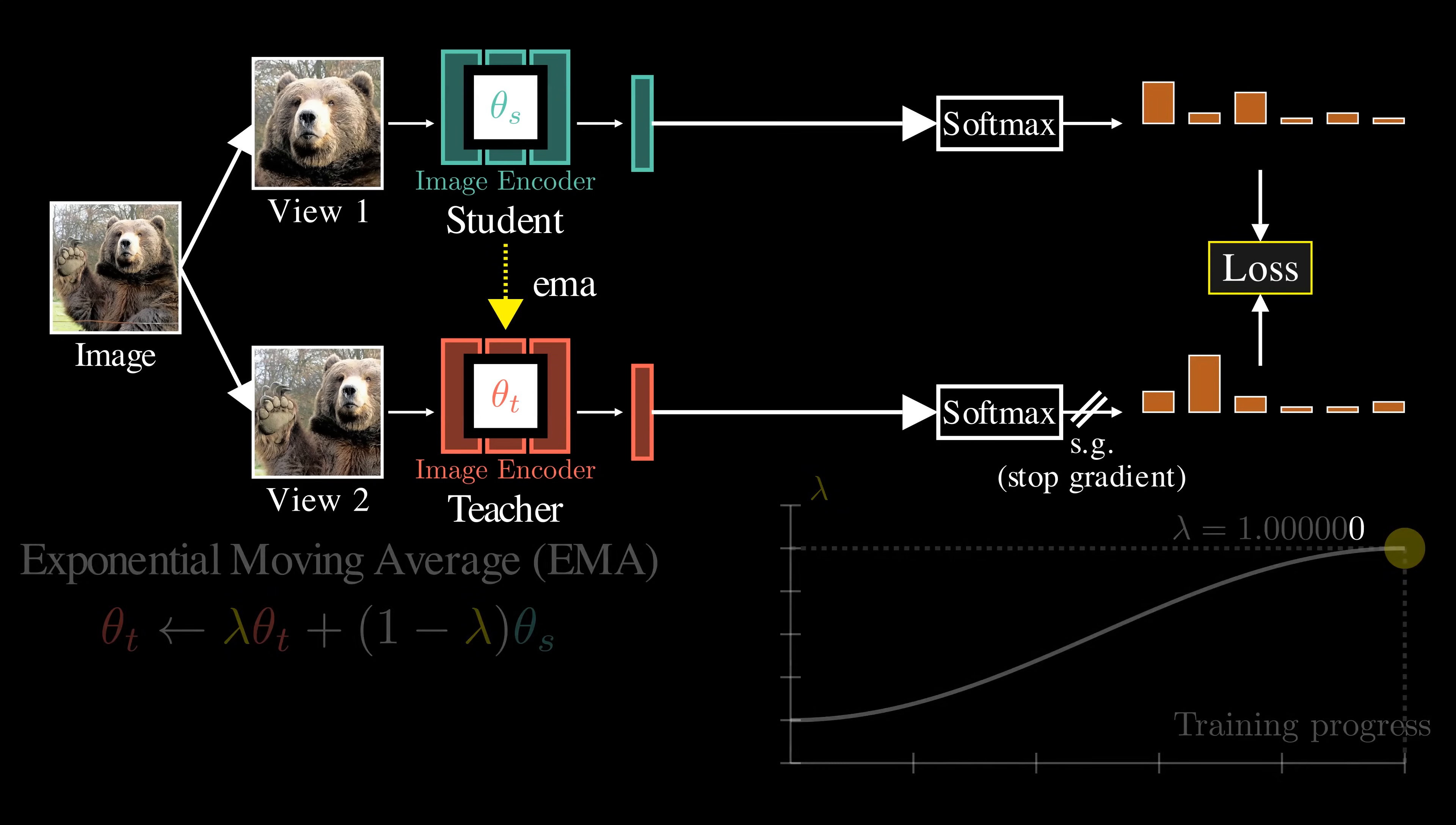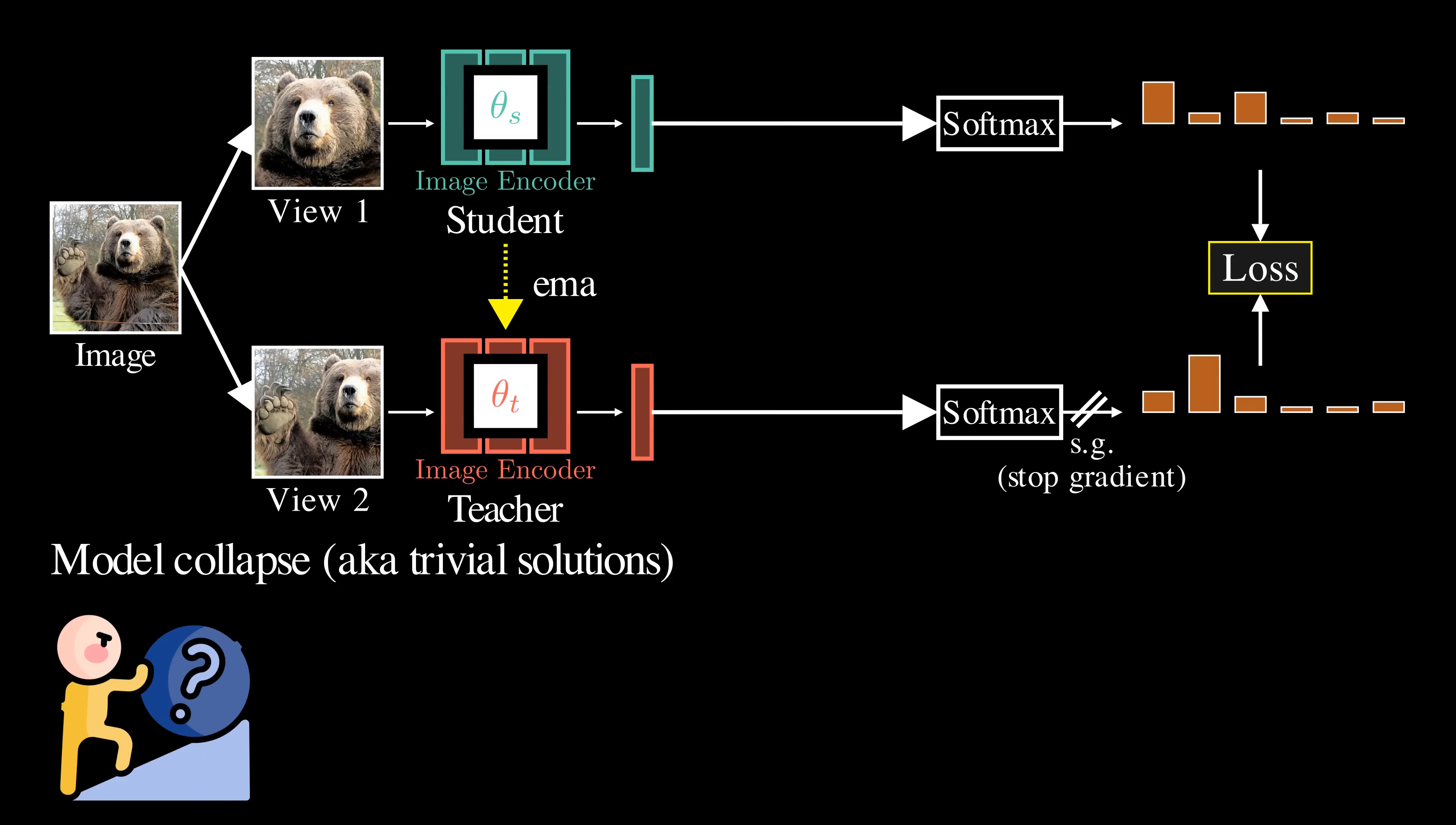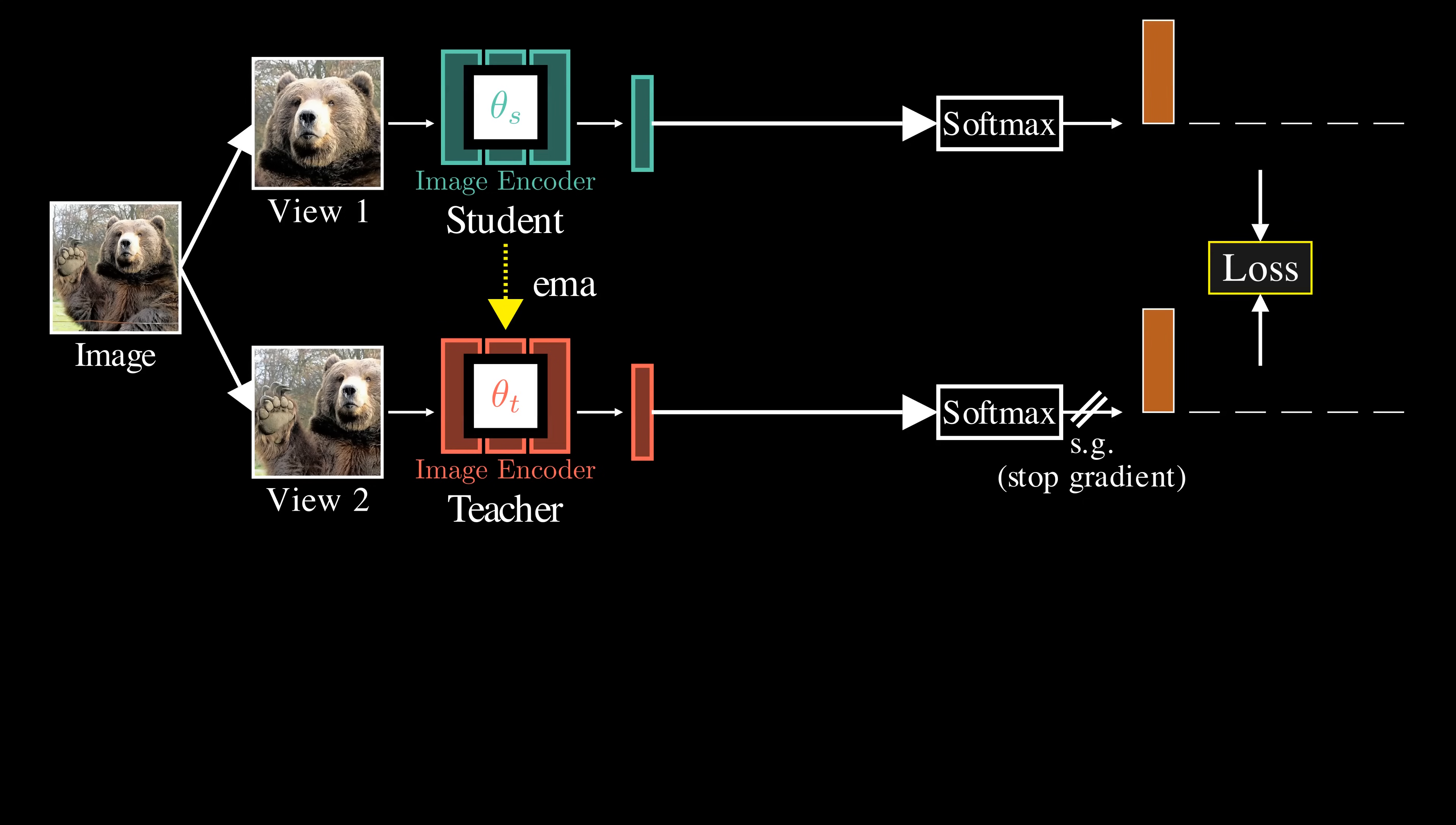This is great. However, this approach alone is not enough to prevent the model from collapsing to trivial solutions. For example, the model could end up producing outputs where a single dimension dominates the distributions, resulting in uninformative or collapsed representations. To address this, we use a trick called centering.